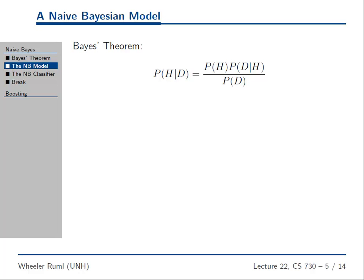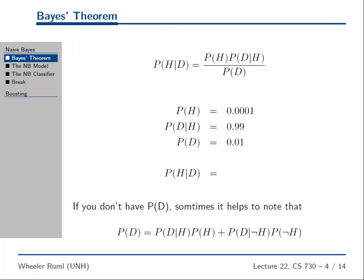So Bayes' rule is true. It's like a mathematical truth, right? We just derived it from the definition of conditional probability. So if you have some data and you're wondering whether some hypothesis is true, this is the optimal way to figure it out. If you know these quantities, this is the computation you do to figure out if the thing is true. This is very handy. If your job is to figure out if the Russians are attacking, you really want to know Bayes' law.